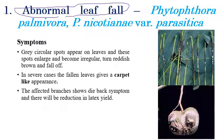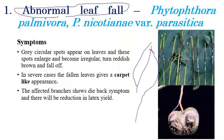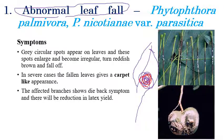The spots enlarge and become irregular and circular. In later stages they turn reddish in color and the leaves fall off. The most important symptom is that the fallen leaves give a carpet-like appearance on the fallen area — this is a very important symptom to remember for exams.